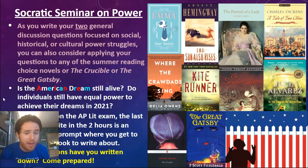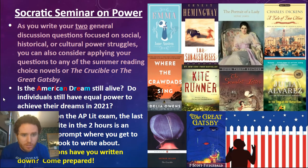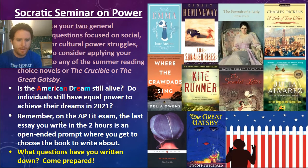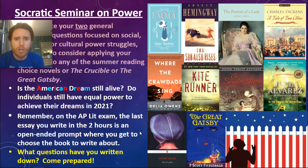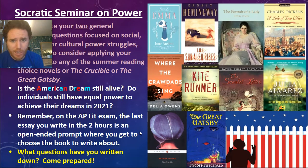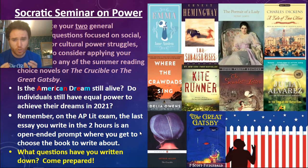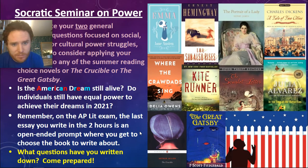You could also consider posing a question related to power struggles between younger and older generations, which we did in our analysis of anyone lived in a pretty how town. As you write your two general discussion questions, consider applying them to summer reading choice novels, The Crucible, or The Great Gatsby. For instance: Is the American Dream still alive? Do individuals still have equal power to achieve their dreams in 2021? Remember, on the AP Lit Exam, the last essay is an open-ended prompt where you choose the book you write about — it could be any of your summer reading books, your choice novel, The Crucible, Gatsby, Hamlet, or Slaughterhouse-Five.